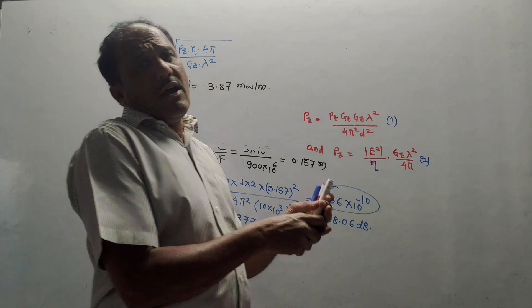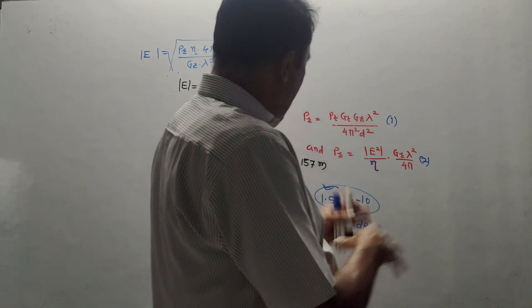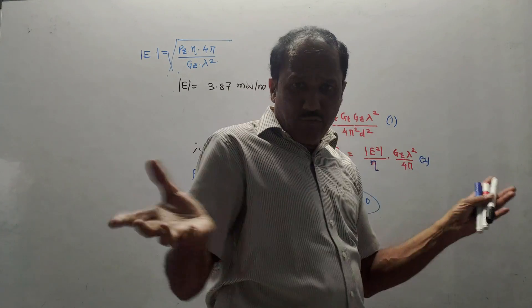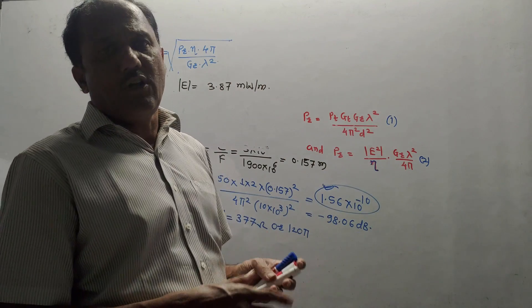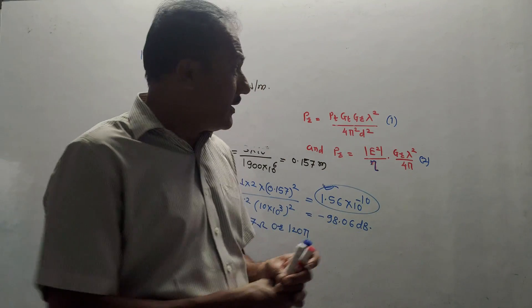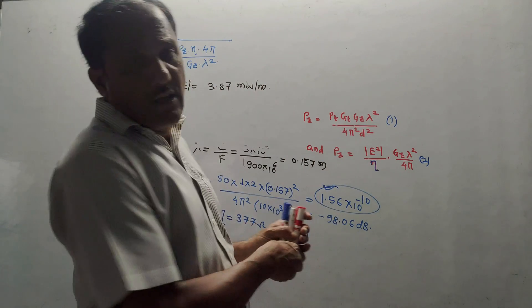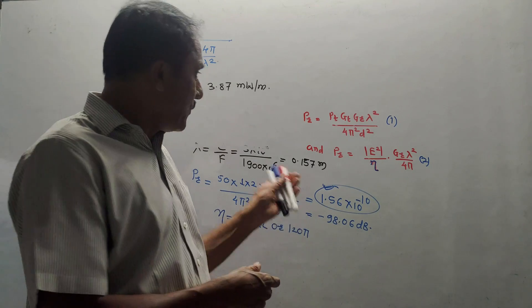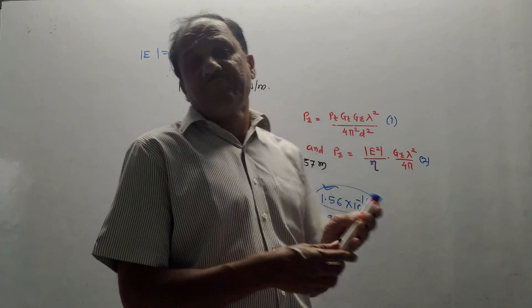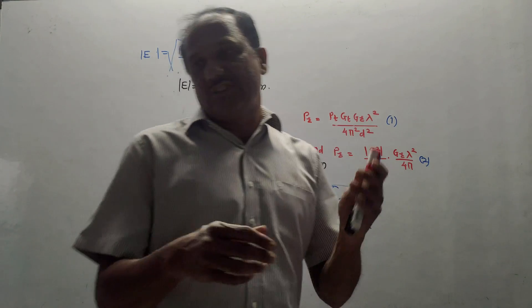Dear students, I have covered all the types of variations as far as this two-ray model or ground reflection model for mobile communication is concerned. That's it for today's session. Thank you very much.